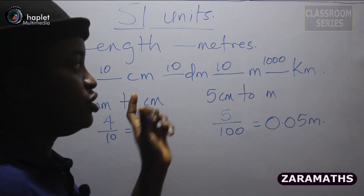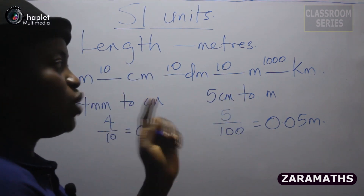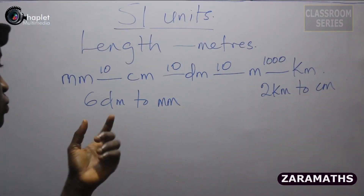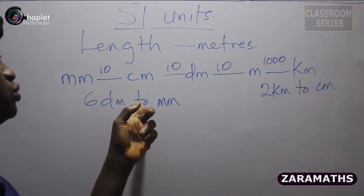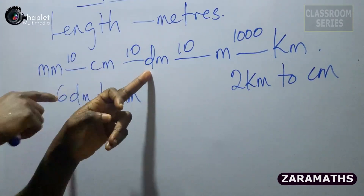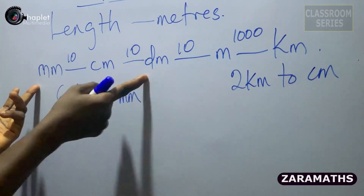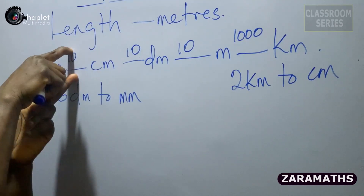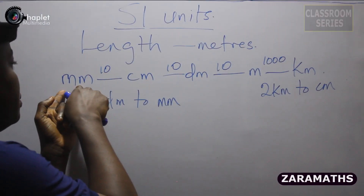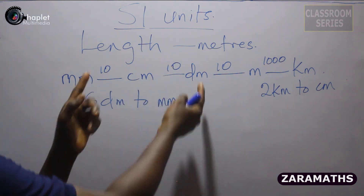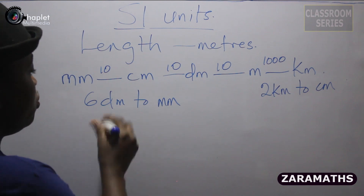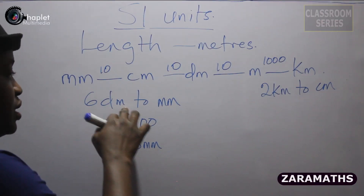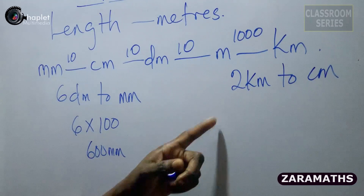On the conversion: whenever you are converting forward you are dividing, so if you are converting backwards you are multiplying. Another example — you want to convert 6 decimeters to millimeters. From decimeters to millimeters we are moving backward, so we are going to be multiplying by 10 by 10, which is 100. So 6 decimeters to millimeters will be 6 multiplied by 100, which is 600 millimeters.